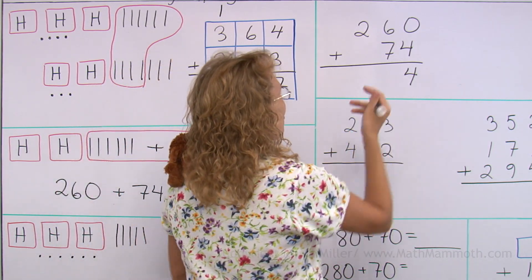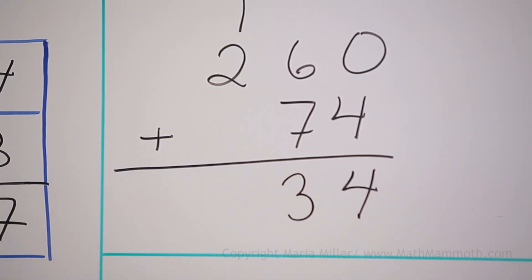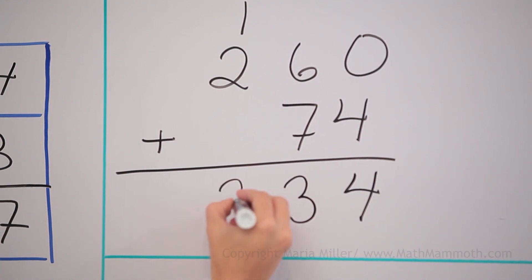And so of the thirteen tens, ten tens become a hundred, and three tens stay here. And then the hundreds, three.